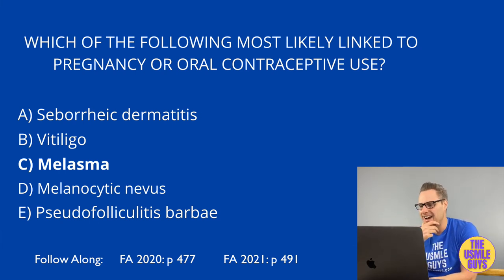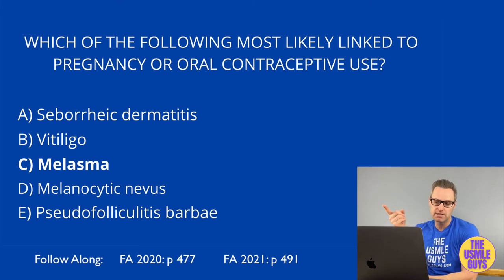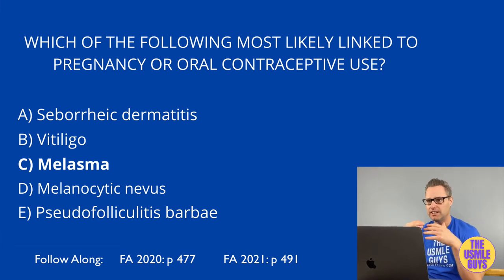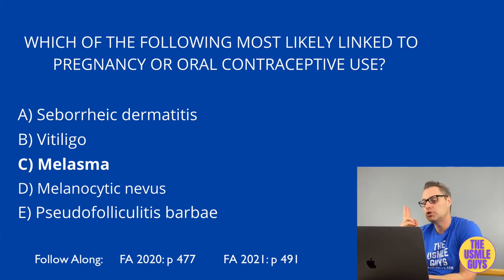First, what is albinism? It's an autosomal recessive inherited disorder, which means someone affected most likely had parents who were carriers. The parents had the genotype but not the phenotype — they were heterozygotes with a one-in-four chance of the child inheriting two recessive alleles and becoming homozygous recessive.